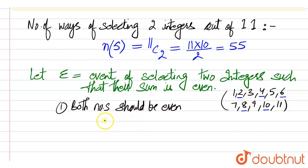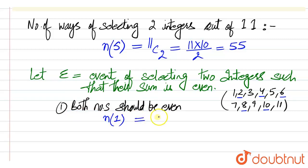Both numbers should be even. So the possible cases, let this be event 1. The number of elements in event 1 would be: we have to choose two numbers out of the 5 even numbers. This is 5C2, which is equal to 10.